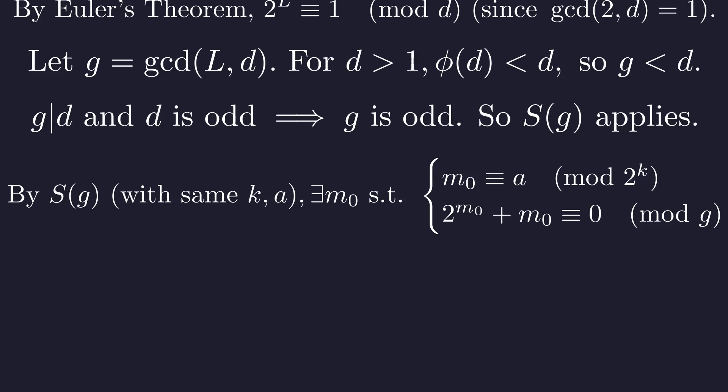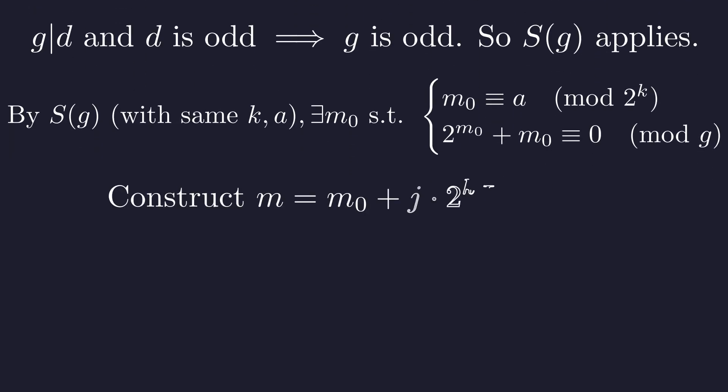Applying S of g with the same k and a gives us an integer m0 that satisfies our conditions modulo g. This m0 is our starting point. We now search for our final solution m by adding a corrective term to m0. Our only free parameter is j.